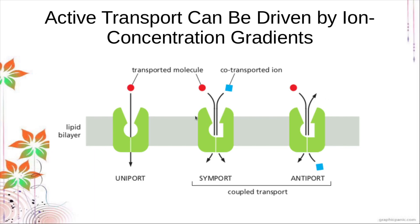For coupled transport we have two types: symport and antiport. For the symport, the movement is in the same direction — for example, both going inside. The co-transported ion undergoes passive diffusion, and its concentration gradient drives the active transport of the other molecule; they move across the membrane at the same time. An example is the sodium-glucose carrier. What drives glucose against its concentration gradient is the concentration of sodium ions — the sodium ions drive the active transport of glucose to the inside of the cell.